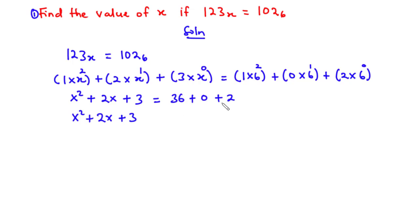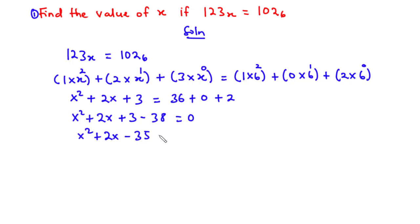And then 36 plus 2 is 38. We transpose that to the left-hand side, giving us x squared plus 2x plus 3 minus 38 equals 0, which becomes x squared plus 2x minus 35 equals 0. The coefficient of the x squared term is 1 and the constant term is negative 35. We need to find factors of negative 35 that add up to 2 and multiply to negative 35.